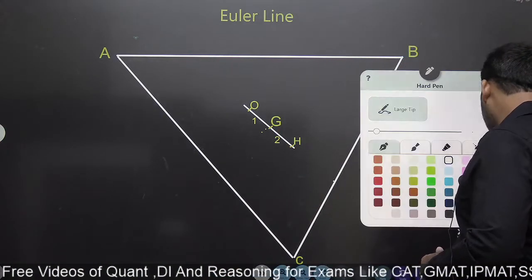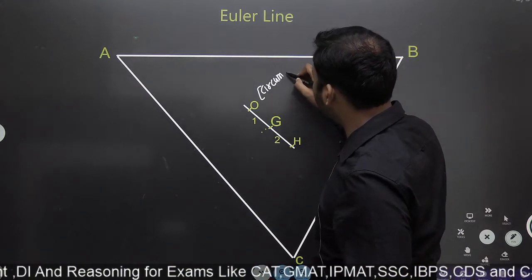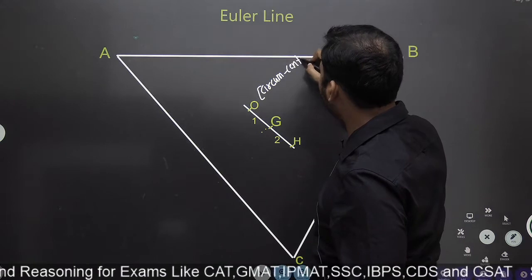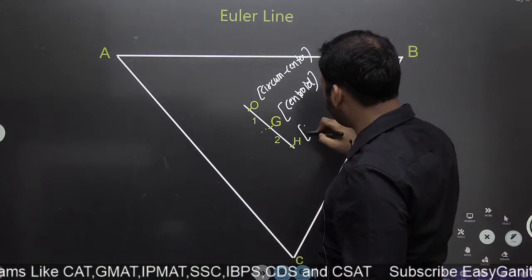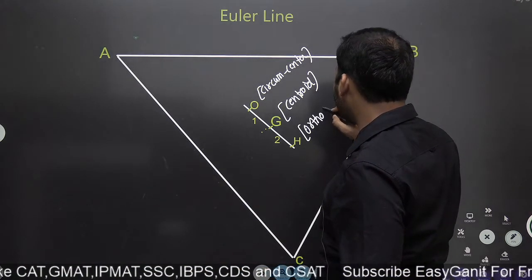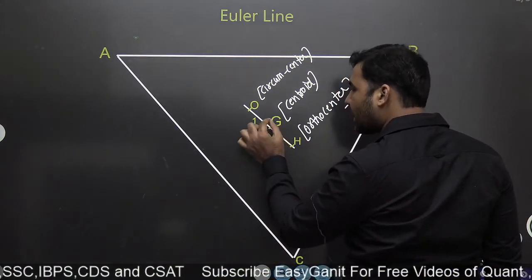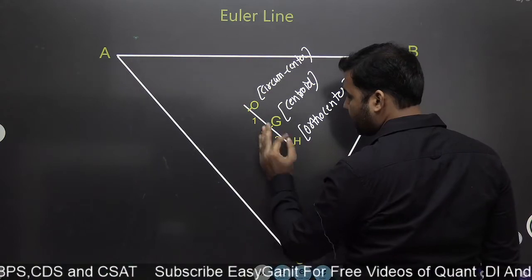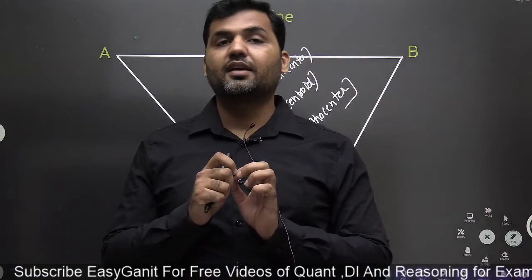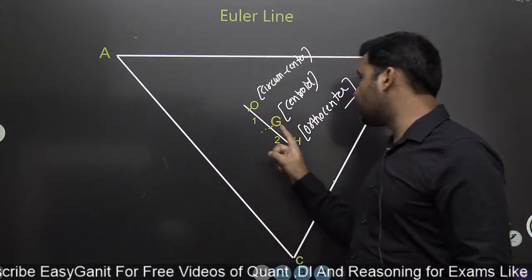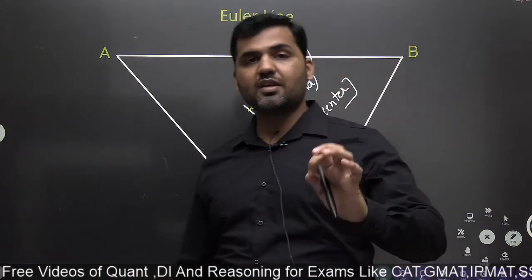Keep this in mind: this is your circumcenter, this is your centroid, and this is your orthocenter. All three centers of the triangle will lie on the same line, and the centroid will divide the line joining the circumcenter and the orthocenter in the ratio 1:2. Chances are you will get a question directly based on the Euler line, so let's talk about the proof of this theorem.